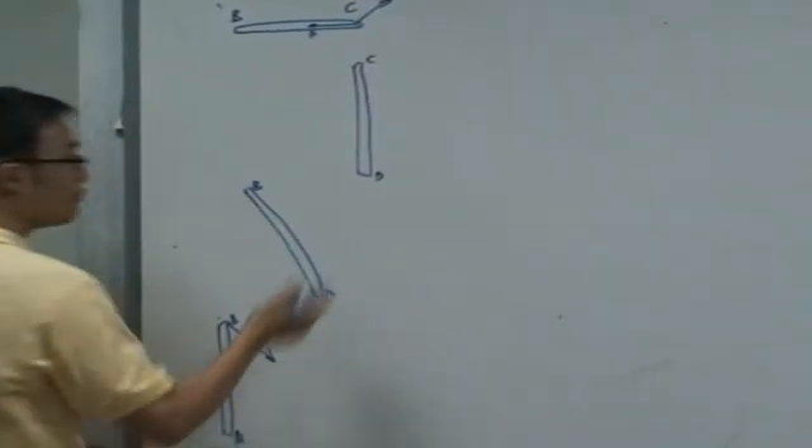So the force from member BC, we don't know its direction yet. What's the direction from BC to member BA? It should be in the axial direction as well. It's either this or this, but it should be in the axial direction. Why?